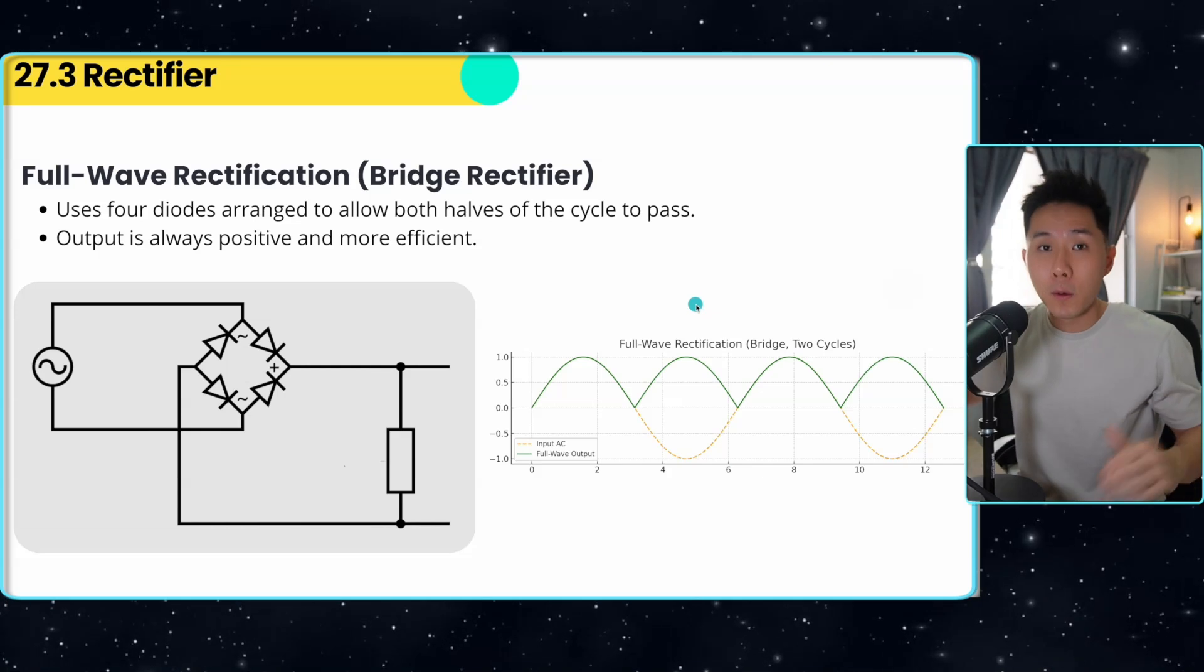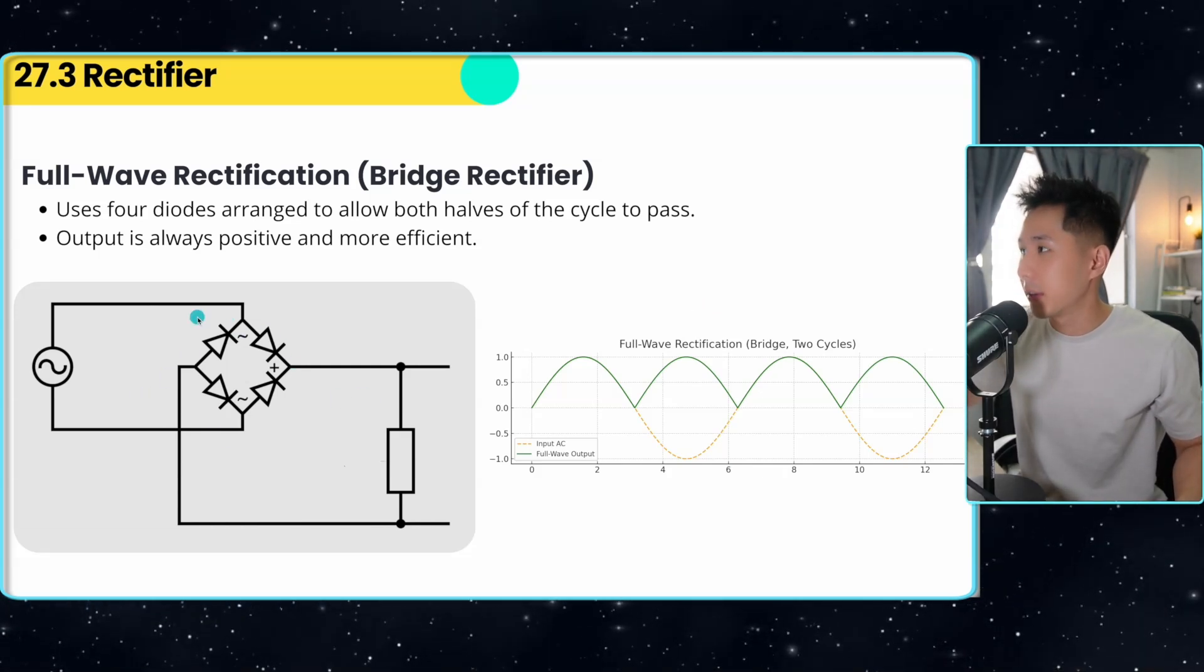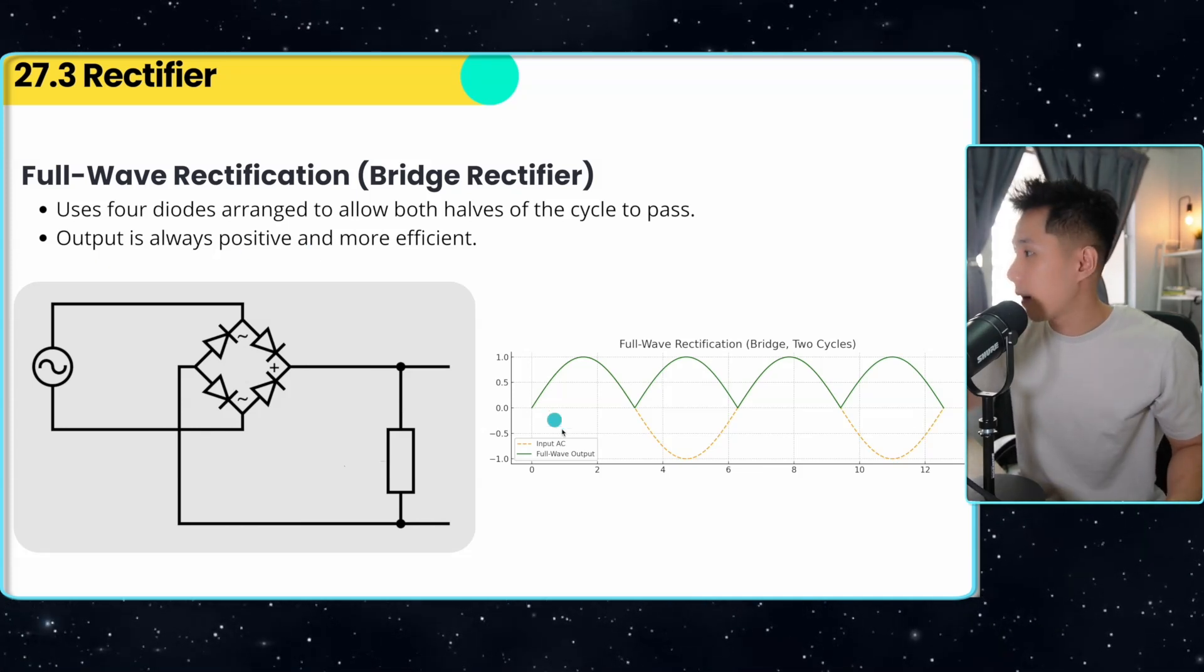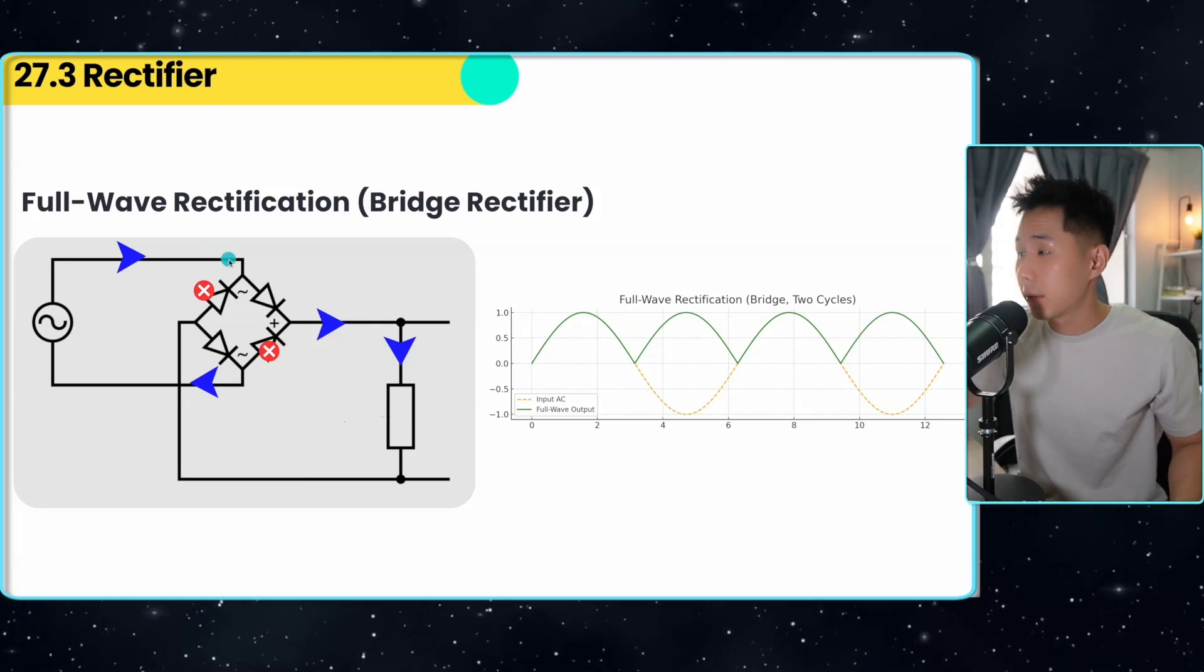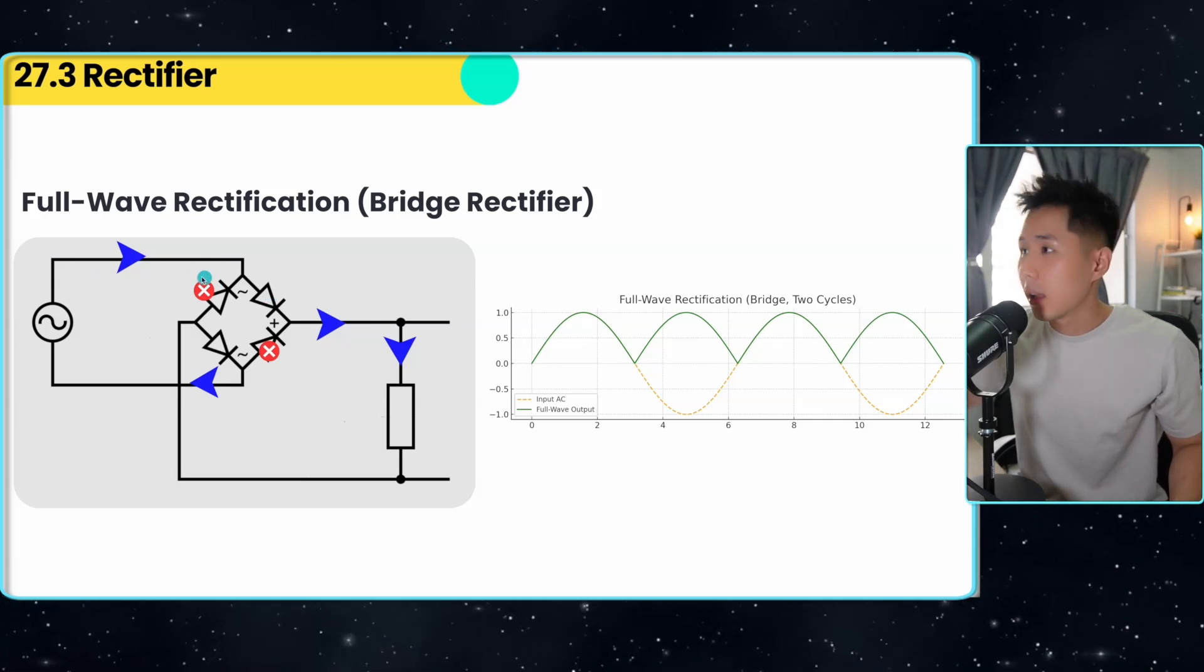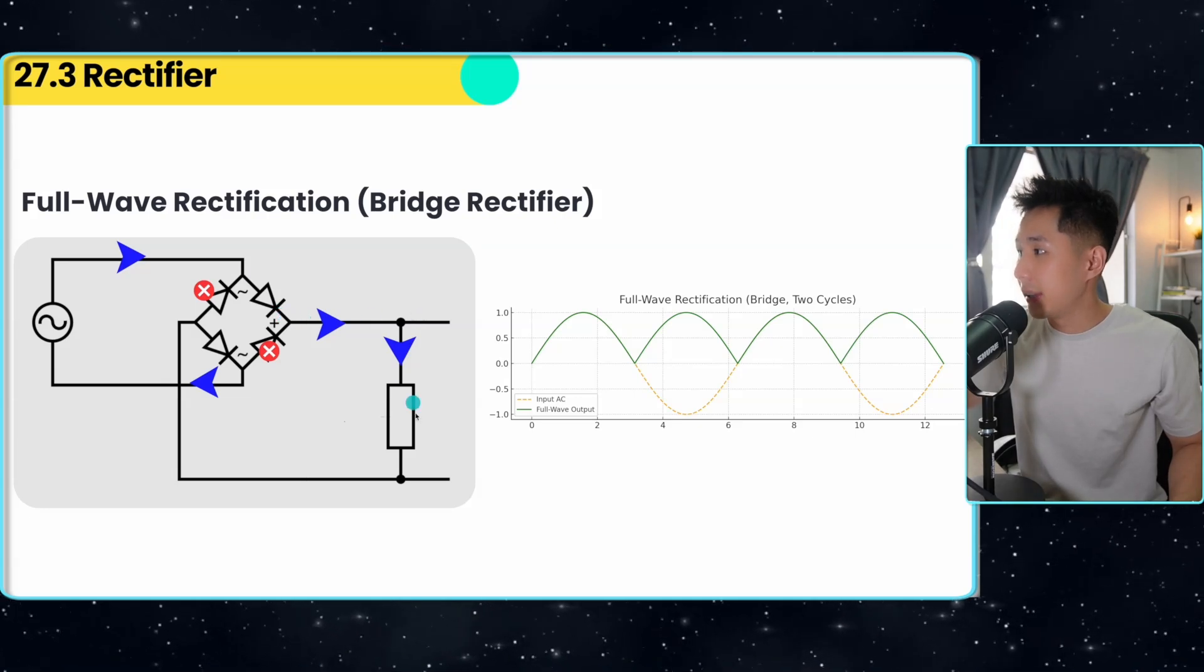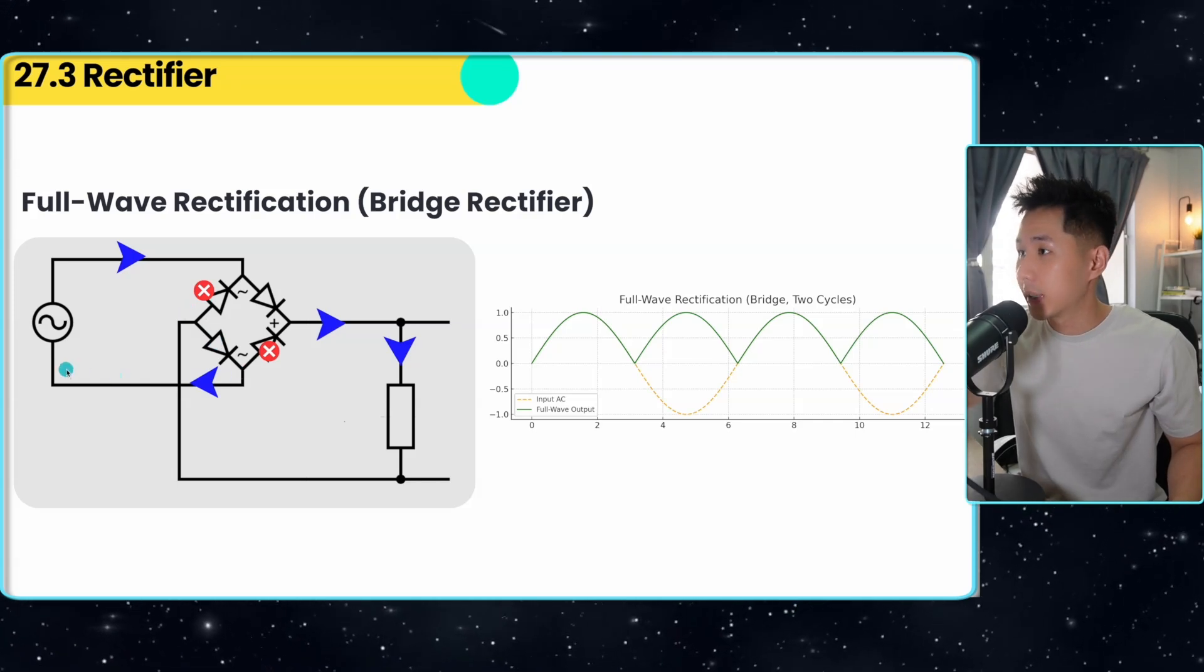But this is not very useful. What if the equipment just needs to access current all the time? That's when we have full wave rectification. So this is how you can set up a full wave rectification. So how does it work? Now, in the first cycle, when current is flowing in this direction, say the current flowing from the left to the right, and according to this arrangement, current can only flow through this diode, and then get into whatever component you have here, and then exit through this channel.